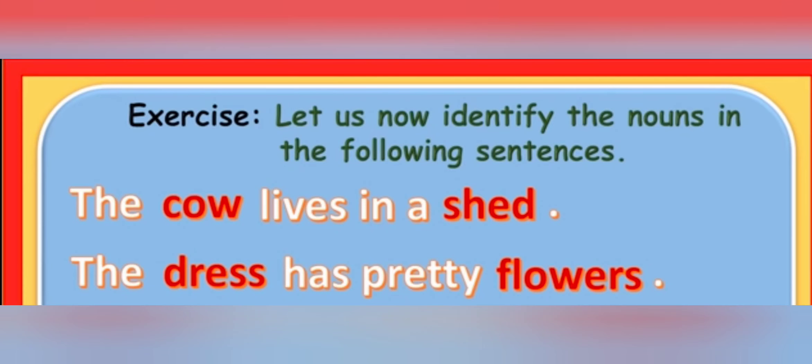Now, let us look at the second sentence. The dress has pretty flowers. In this, the word dress is a name of a thing. And flowers is also a name of a thing.